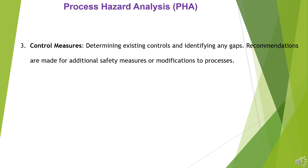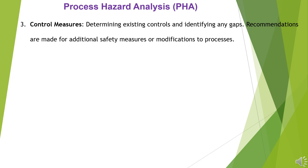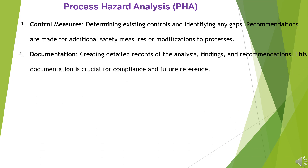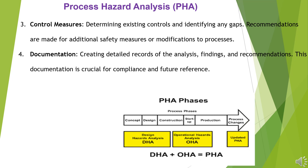3. Control Measures: determining existing controls and identifying any gaps. Recommendations are made for additional safety measures or modifications to processes. 4. Documentation: creating detailed records of the analysis, findings, and recommendations. This documentation is crucial for compliance and future reference.